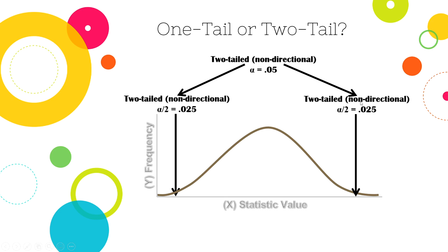A two-tailed test takes your 0.05 alpha and splits it so that 2.5% is in the bottom tail and 2.5% is in the top tail. This means that for a value to be extreme on the right side, it has to be further out — closer to the tail of the distribution — which demands scores be more extreme before we become convinced by them. So in a non-directional hypothesis, you would simply say girls and boys have different or unequal GPAs. And even when we form a directional hypothesis such as 'girls have higher GPAs than boys,' in science we almost always still perform a two-tailed test. The conventions in science are generally two-tailed tests with a 0.05 alpha.